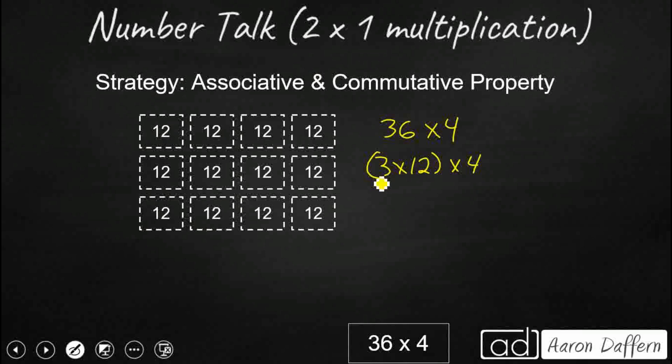It lets us group our factors in different ways. So instead of 3 groups of 12 times 4, we are going to say 3 groups of 12 groups of 4. And that is the associative property. It just lets us move the parentheses and switch how we group 3 or more factors. But the commutative property is our order property. And that's going to be helpful because I really don't want to do 12 groups of 4. What I'd rather do is flip these two around. And I'd rather do 3 groups of 4 groups of 12.